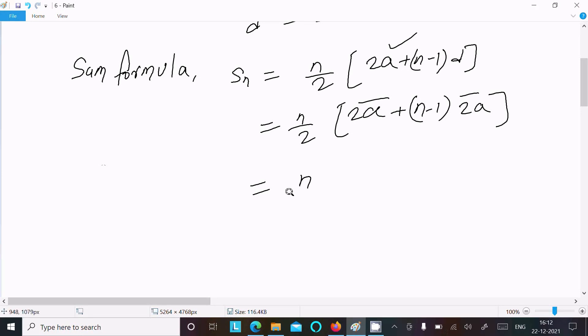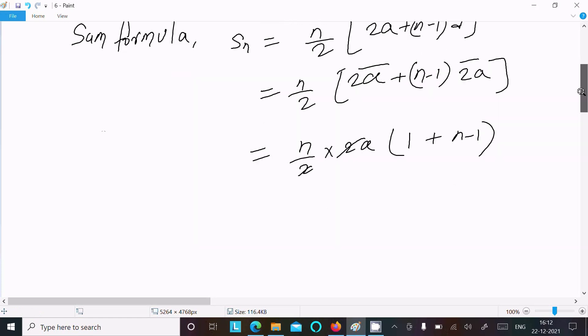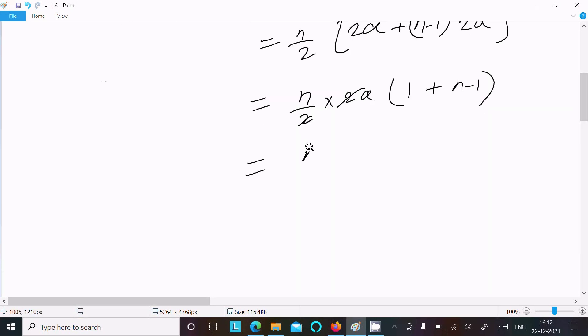So this gives 1 here, and here (n-1). This 2 cancels, then n and here a, these cancel, leaving n.